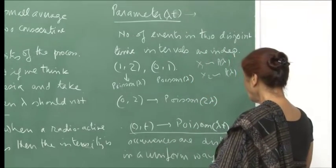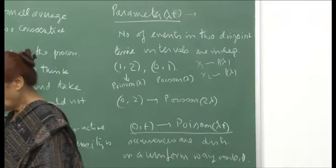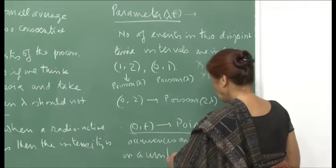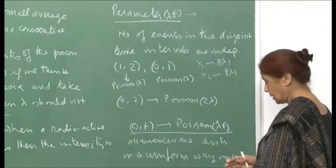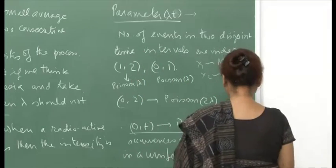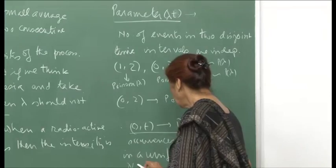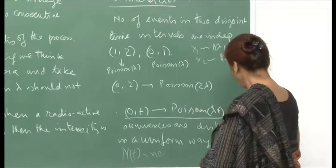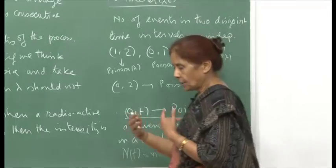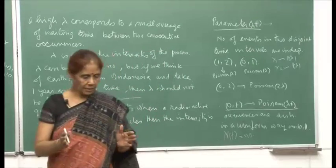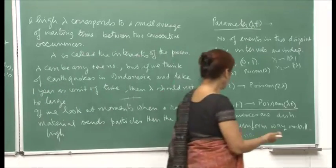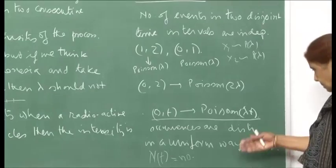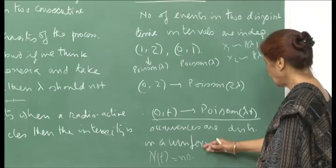Since we have stationary increments, arrivals over (0,t) are distributed in a uniform way — they can occur anywhere in that interval. The best way to model this is that the arrivals are uniformly distributed over (0, t). Through an example, I will make this concept clearer.